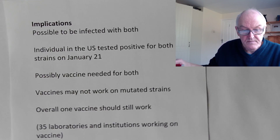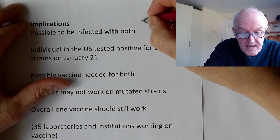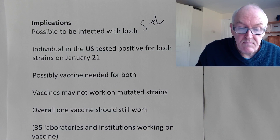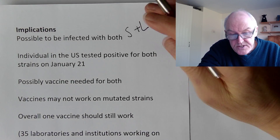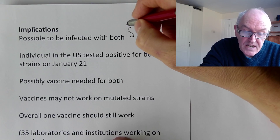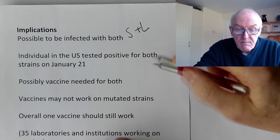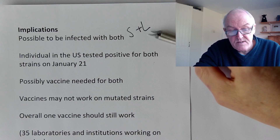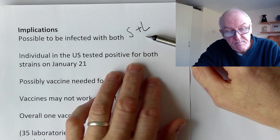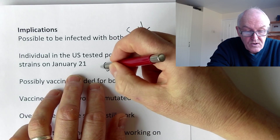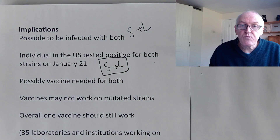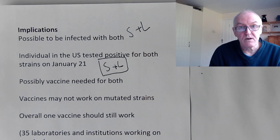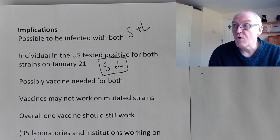The practical implications of this: it is possible to be infected with both the S and the L type. Both strains appear to be circulating. It looks like there might be more S types than L types, though this all needs to be clarified. An individual in the US tested positive for both strains. If we don't lock down properly like the Chinese did, the L form - the more transmissible, more infectious form - might become more prevalent, making the epidemic more serious.